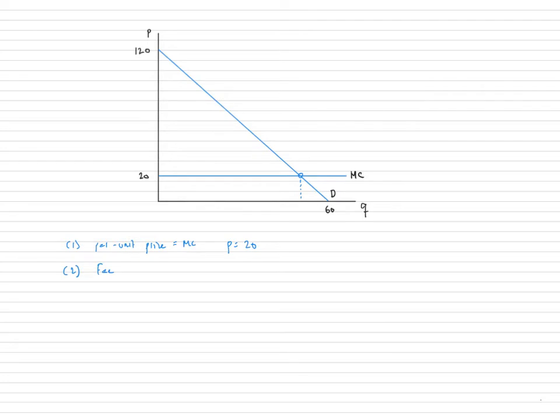So to find the number of golf rounds, we just look at the inverse demand function, 120 minus 2Q. And we know that the price is going to be equal to marginal cost, and marginal cost equals 20. So if you just substitute that in, we'll get that Joe is going to be playing 100 divided by 2. He's going to be playing 50 rounds of golf.